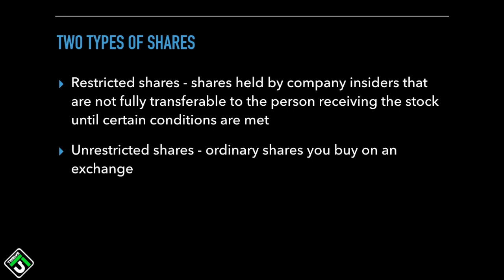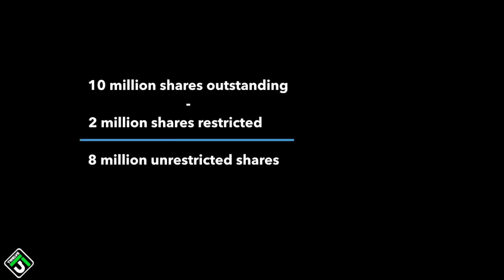Then there are unrestricted shares. These are shares that anyone from the public can buy and sell. These are the shares that when you log into your broker and want to buy shares of a stock, you're going to be buying. So from our 10 million outstanding share example, if 2 million were restricted shares, the 8 million shares left over are unrestricted shares — available to the public to freely buy and sell.